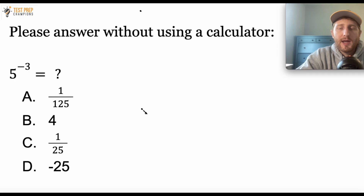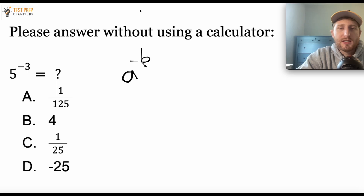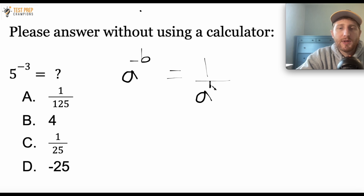So in order to get this right, the first thing to understand here is that whenever you have a base raised to a negative exponent, you can rewrite this as 1 over that same base raised to the same exponent, but the exponent is positive.